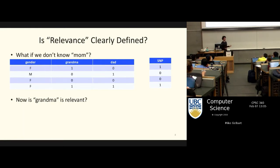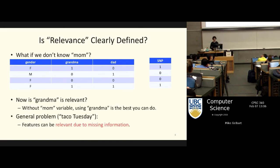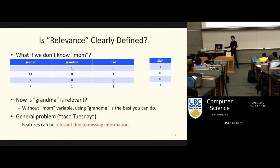If we don't know the mom feature, then the grandma feature is actually useful. We also talked about the taco Tuesday example: knowing it's Tuesday is reasonably good at predicting whether I got sick, but what I really want to know is whether I had tacos. Knowing it's Tuesday is better than nothing, but it's not really the cause and it's not really the best feature.